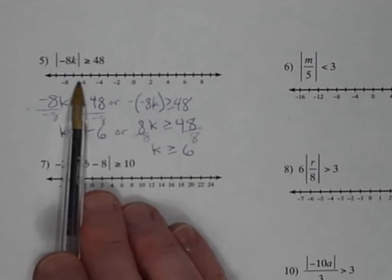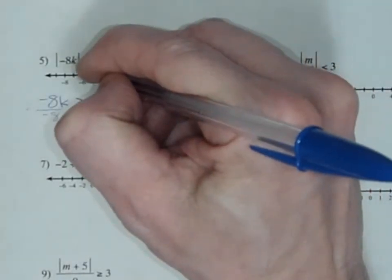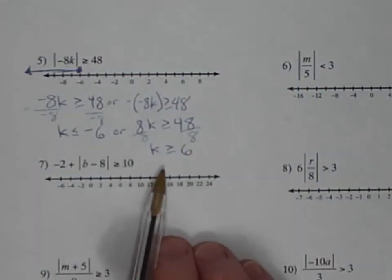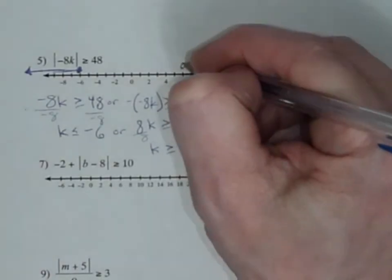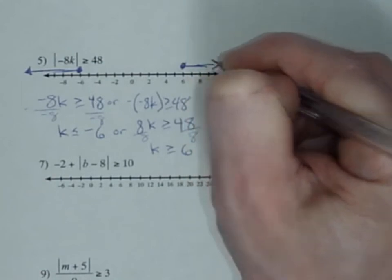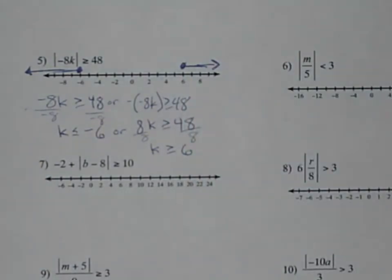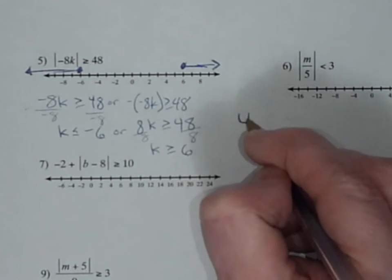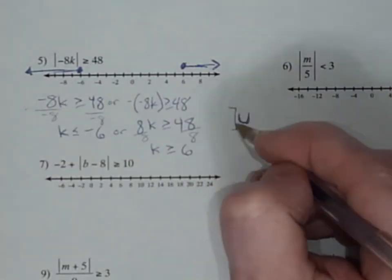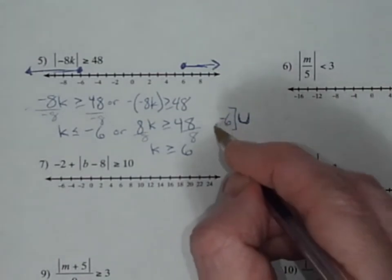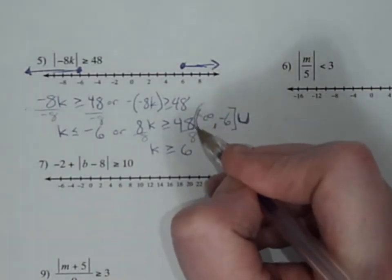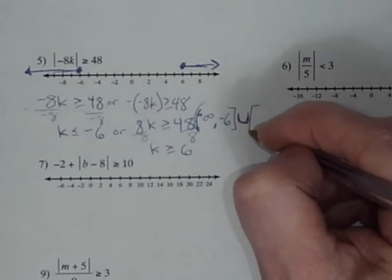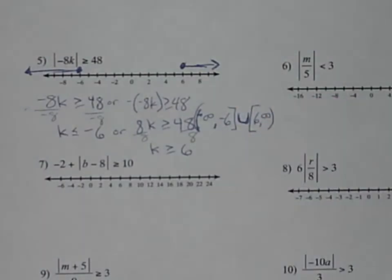So this or this both work. I want the numbers less than or equal to negative 6 — there's negative 6, so less than or equal to negative 6. Or another solution is when it's greater than or equal to 6. To find the union and write interval notation: this includes negative 6 all the way down to negative infinity, and it also includes 6 all the way up to positive infinity.